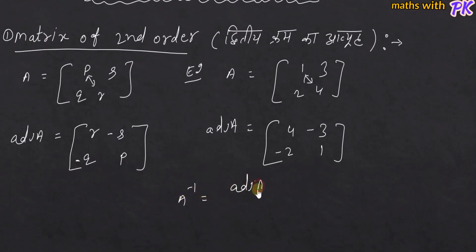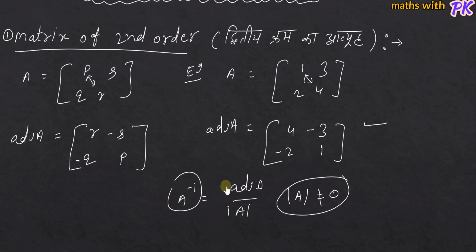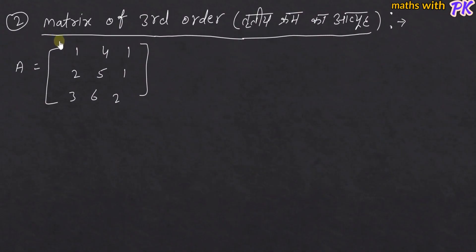Adjoint A divided by determinant of A gives the inverse. The determinant of A must not be zero. If the determinant of A is not zero, you can find Adjoint A and then divide by the determinant. This gives the inverse. I have taken the example of matrix A.